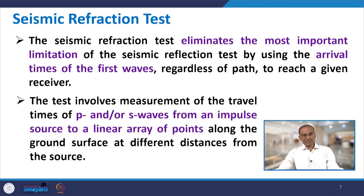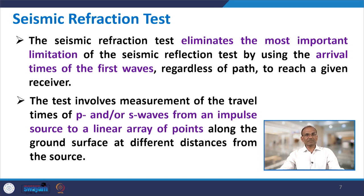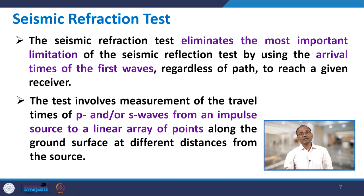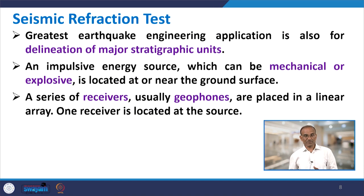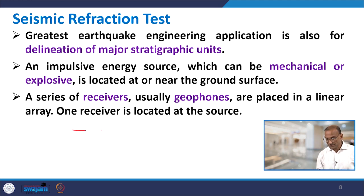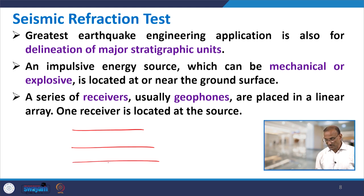Coming to the seismic refraction test: this test eliminates the most important limitations of seismic refraction by using the arrival times of the first waves regardless of the path. It involves measurement of the travel time of either P waves or S waves — body waves — created through an impulse source on a linear array of points, with receivers or geophones at different distances from the source. The greatest earthquake engineering application is delineation of major stratification units.